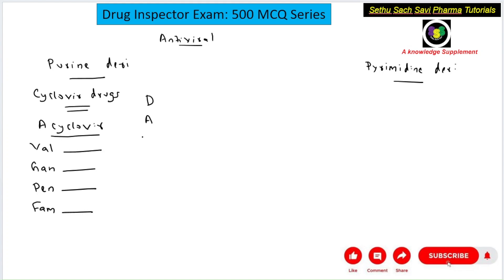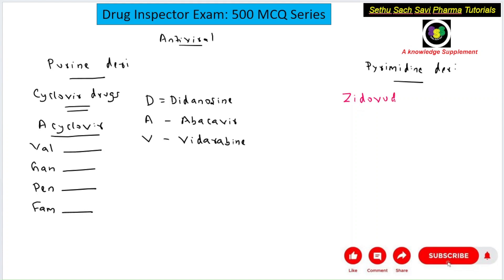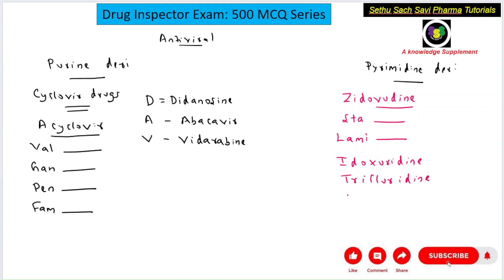Apart from the cyclovir drugs, you can remember the mnemonic DAV for purine derivatives: D stands for didanosine, A stands for abacavir (which contains a purine ring), and V stands for vidarabine. These are all purine derivatives.